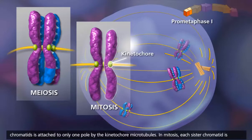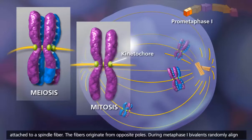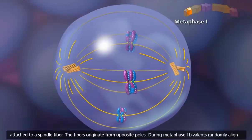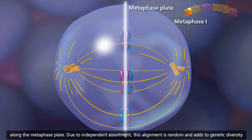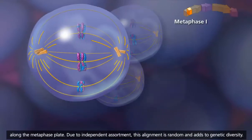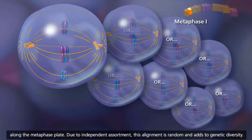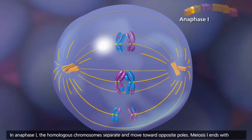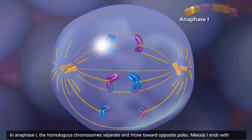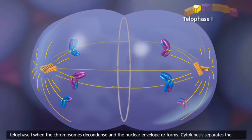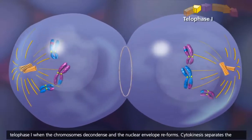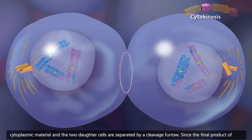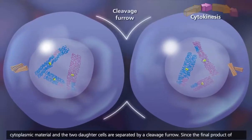In mitosis, each sister chromatid is attached to a spindle fiber, and the fibers originate from opposite poles. During metaphase I, bivalents randomly align along the metaphase plate. Due to independent assortment, this alignment is random and adds to genetic diversity. In anaphase I, the homologous chromosomes separate and move toward opposite poles. Meiosis I ends with telophase I, when the chromosomes decondense and the nuclear envelope reforms.